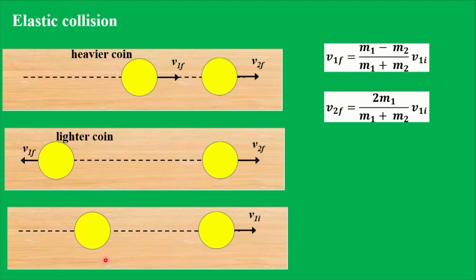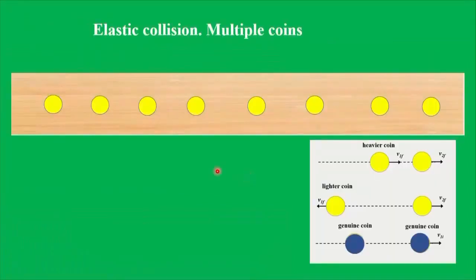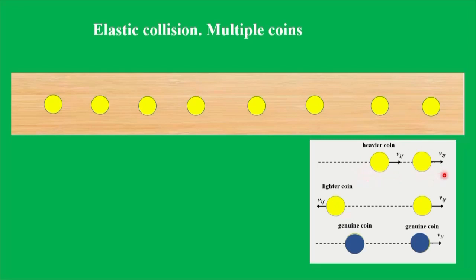We will mark these genuine coins with blue color. Now we can proceed to the general case of multiple coins. We align them along a straight line, then push the first coin, and after this we observe the collisions. The goal is to identify the situation when a collision leads to motion of both colliding coins either in the same direction or in opposite directions. In that case, the false coin is among those two. Let's watch the video.